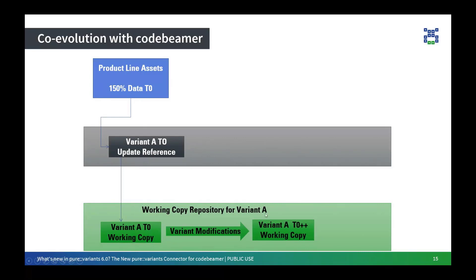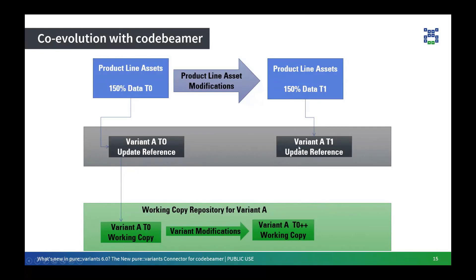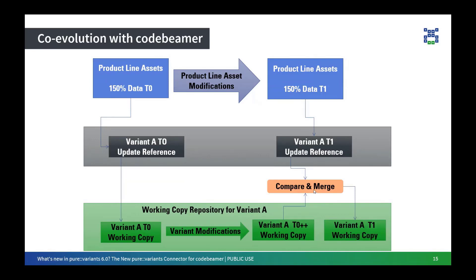Due to certain circumstances, you may also want to make modifications in your product line, giving you a new product line called 150% T1. If you want a working copy updated with all changes from your variant as well as modifications from your product line, first after transformation you receive an update reference copy where all new assets added to your product line get updated. Then, in order to achieve a new variant copy combining T0++ modifications and 150% T1 changes, we make use of the compare and merge functionality. With two-way merge, we finally achieve our Variant A T1 working copy.